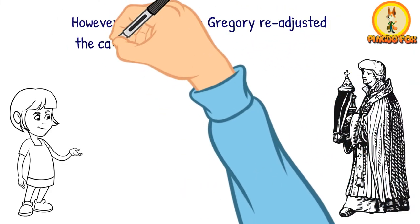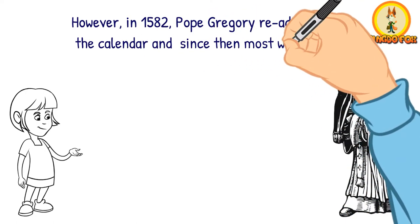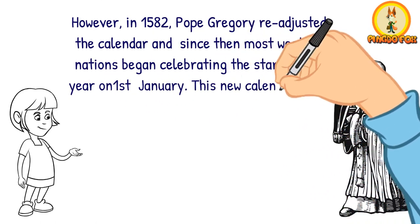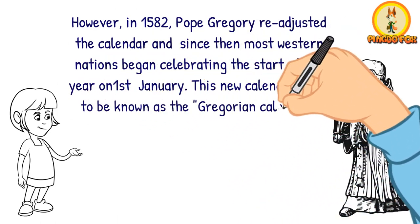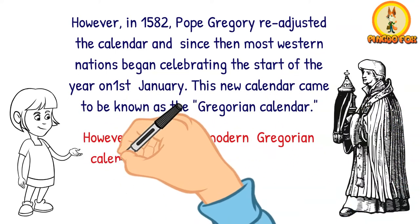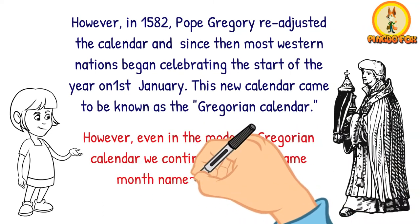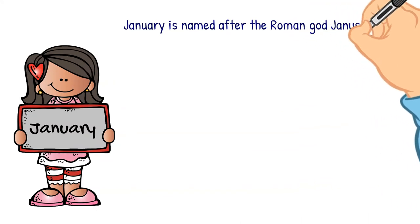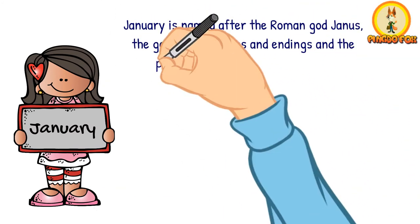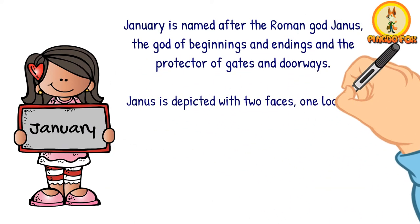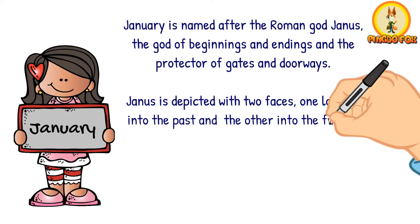However, in 1582, Pope Gregory readjusted the calendar, and since then most western nations began celebrating the start of the year on 1st January. This new calendar came to be known as the Gregorian calendar. However, even in the modern Gregorian calendar, we continue to use the same month names as used by the ancient Romans. January is named after the Roman god Janus, the god of beginnings and endings, and the protector of gates and doorways. Janus is depicted with two faces, one looking into the past and the other into the future.